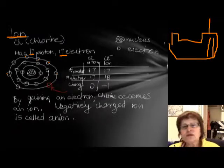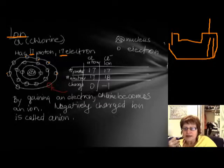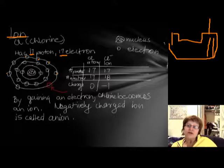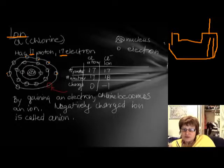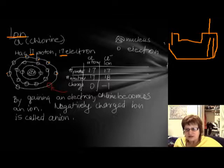When sodium and chlorine meet, sodium says it needs to get rid of an electron and chlorine says it needs to gain an electron. They exchange it, and this is how the ionic bond will form.